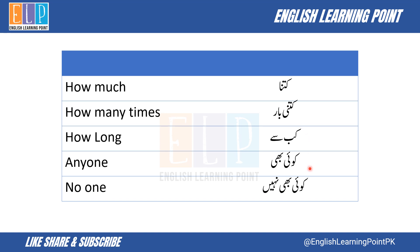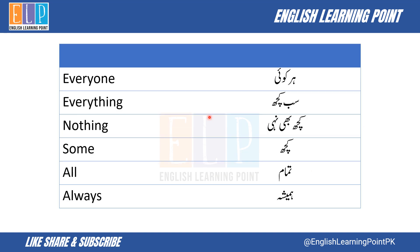Anyone — koi bhi. No one — koi bhi nahi. Everyone — her koi. Everything — sab kuch. Nothing — kuch bhi nahi. Some — kuch. All — tamam.